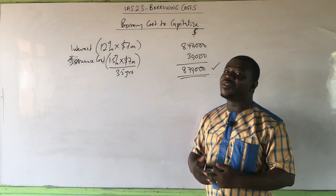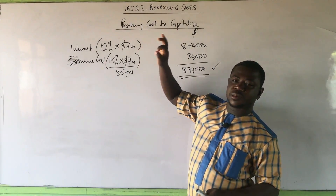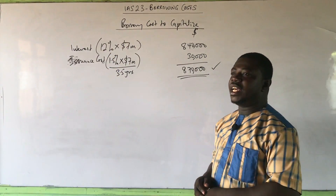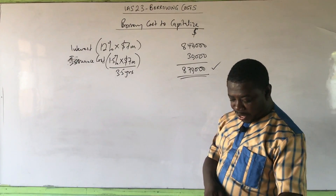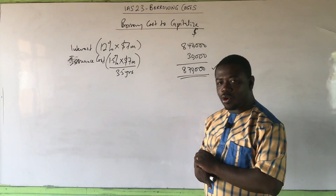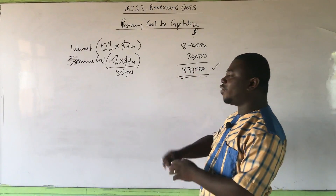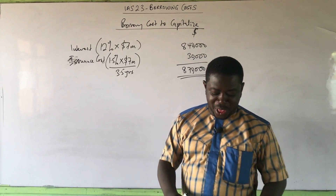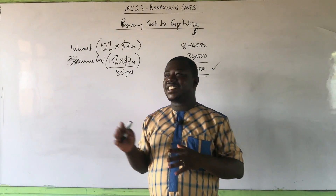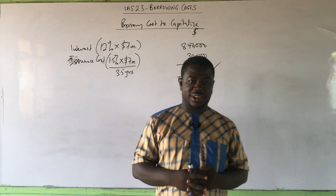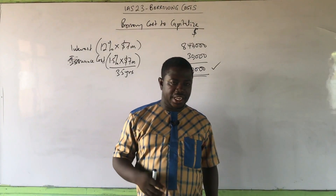Very simple and easy. It has become simple because we spent time to understand the components of borrowing costs. Otherwise, somebody would have picked the 14% cost of capital for equity shares, added it in, and the answer would be wrong. So this is how to solve a question on borrowing costs. Now let us move on to the concept of a qualifying asset.